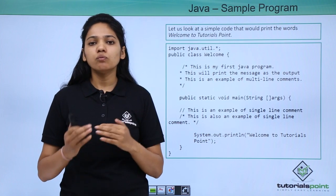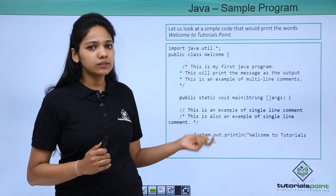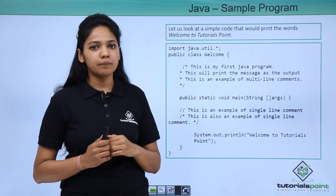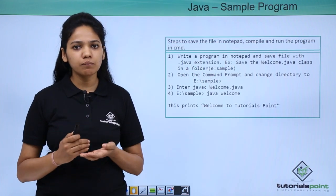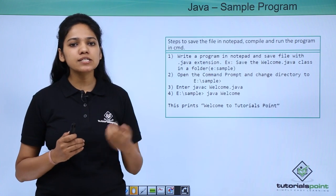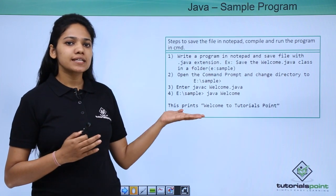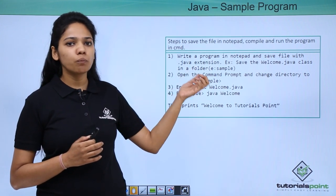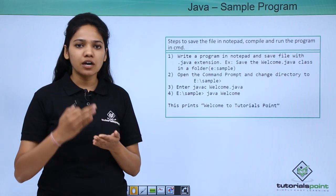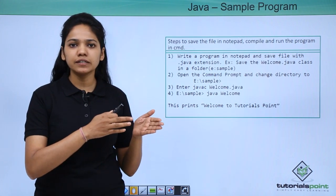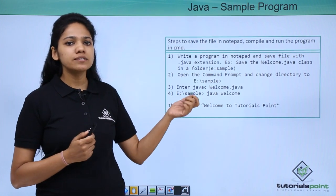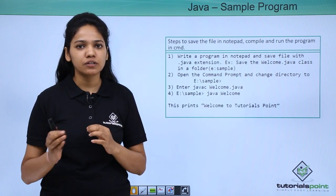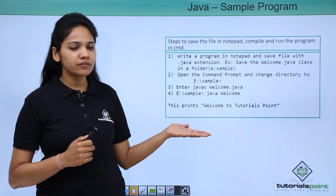Going forward, we will see practically how you can execute this program using Notepad, Eclipse, or the Coding Ground. We have seen how a sample program looks and how you can write it. So let us see one example of how to write it in Notepad and execute it. You need to open Notepad, write the Java program just as provided — the sample program called Welcome — and save the file with the .java extension. You can save it anywhere; in our case we saved it in the E drive.